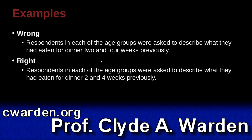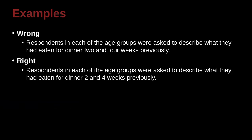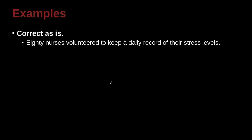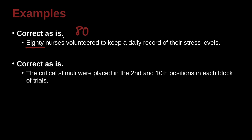Respondents in each age group were asked to describe what they had eaten for dinner 2 and 4 weeks previously. We have a series of numbers inside the sentence comparing them, so we write the numerals, not spell them out. Also: '80 nurses volunteered to keep a daily record of their stress levels.' Even though 80 is bigger than 10, it's the first word in the sentence, so you always have to spell it out. Similarly, 'The critical stimuli were placed in the 2nd and 10th positions in each block of trials' — a series, so use numerals even if one is less than 10.